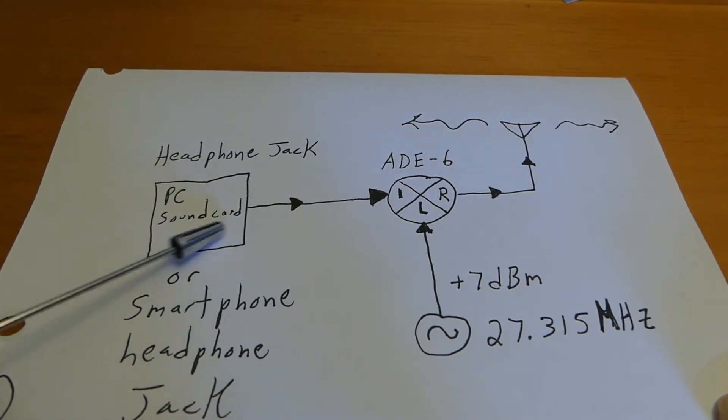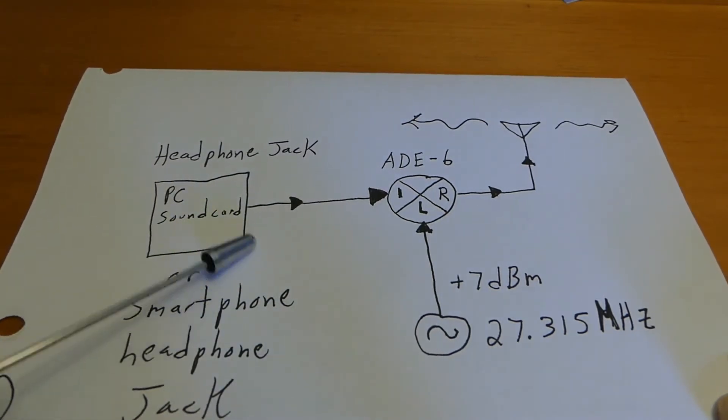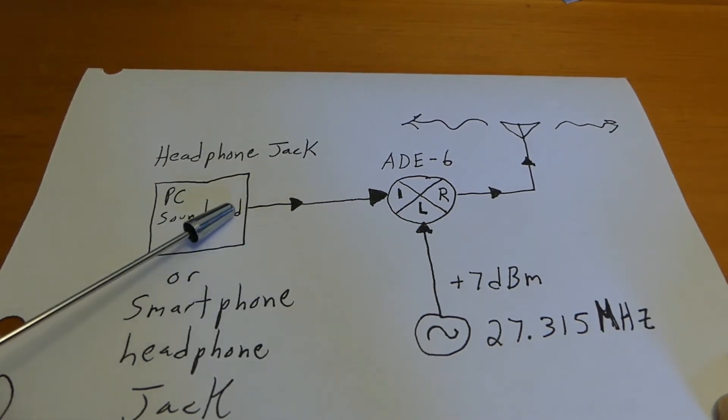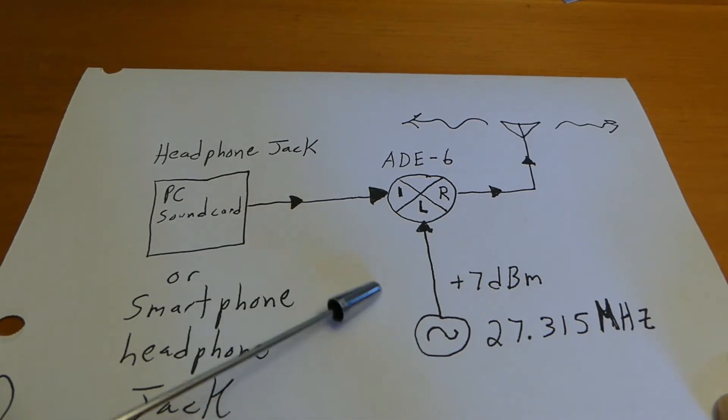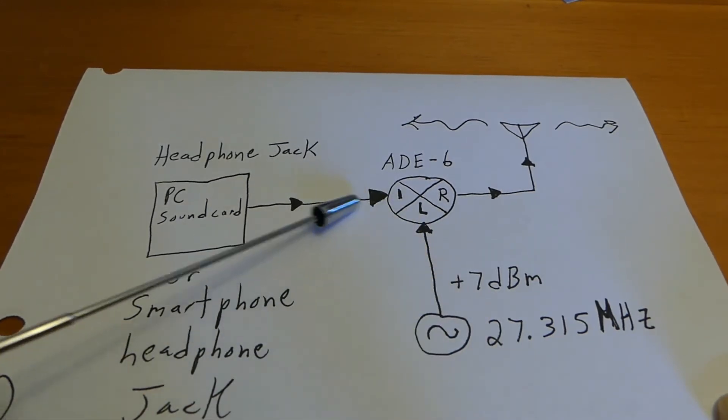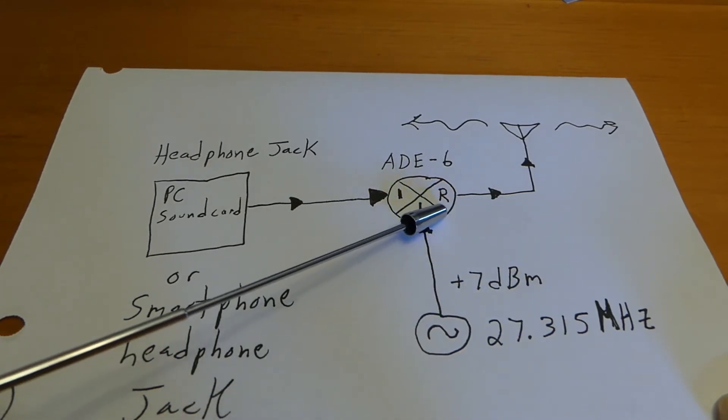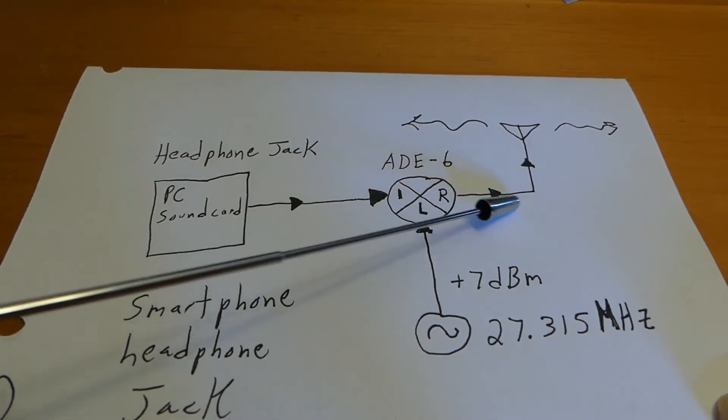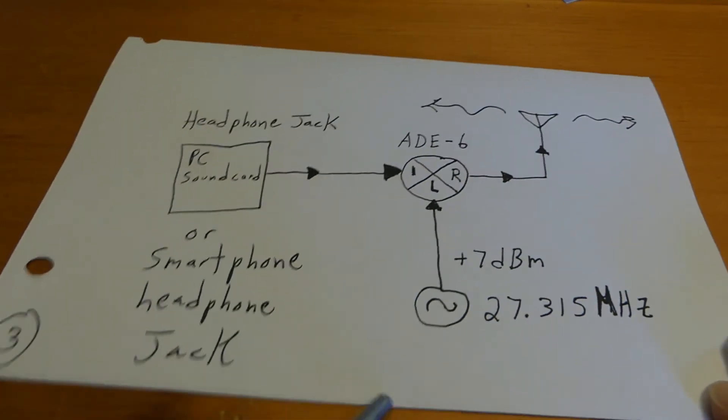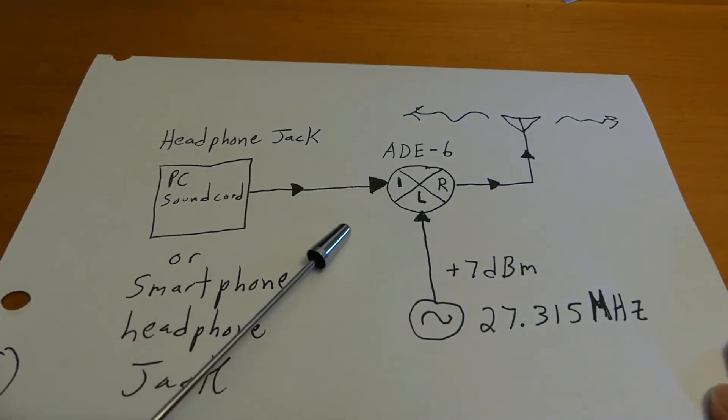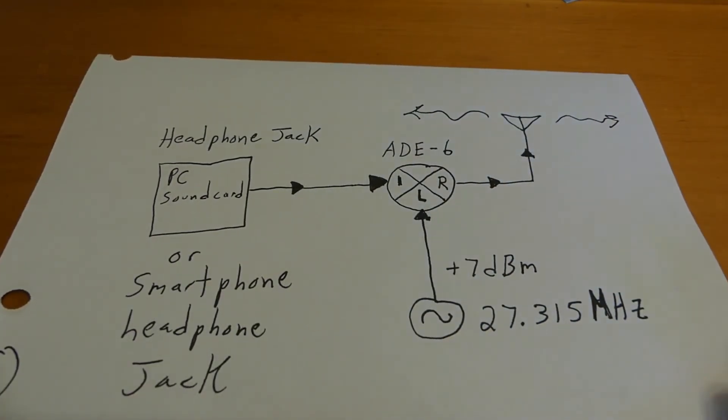But anyway, the idea is you got some spectrum down here coming out your headphone jack and this spectrum is all centered around DC or zero Hertz. We're basically going to modulate it now up to 27.315 megahertz and that will come out the R port and up our little antenna. So this is our proposed design of a poor man's spectral image transmitter.